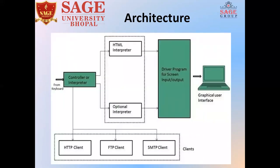This diagram shows the architecture of a web browser. You can see the Controller, which takes inputs from the input device and proceeds to the Interpreter. The Interpreter processes all instructions line by line. As you can see, the mandatory interpreter is HTML and the optional interpreter is, for example, Java. These are the client programs on which the web browser operates.